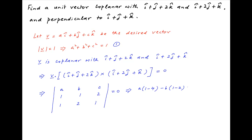The value of this determinant is equal to 0. Opening up the determinant, it equals a times (1 minus 4) minus b times (1 minus 2) plus c times (2 minus 1), and this is equal to 0. This simplifies to minus 3a plus b plus c is equal to 0.